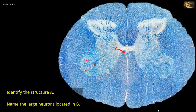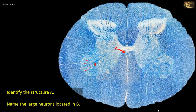Identify the structure A and name the large neurons located in B. A is the anterior commissure of the spinal cord. The anterior white commissure, or ventral white commissure, is a bundle of nerve fibers which cross the midline of the spinal cord just anterior to the gray commissure.